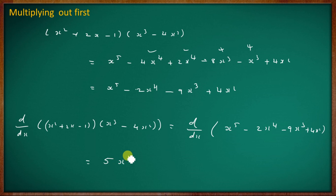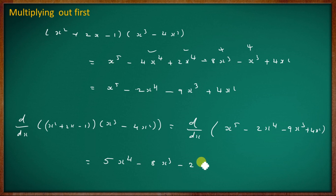Differentiating term by term: 5x⁴, then 4×2 = 8x³, then 9×3 = 27x², plus 8x. This gives 5x⁴ − 8x³ − 27x² + 8x, confirming our product rule answer.